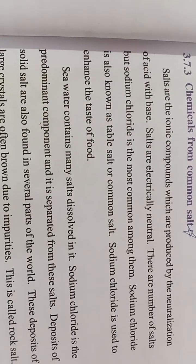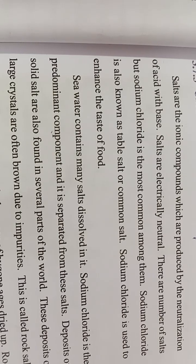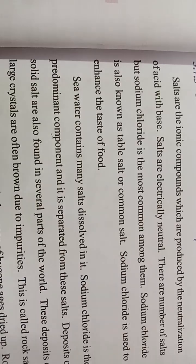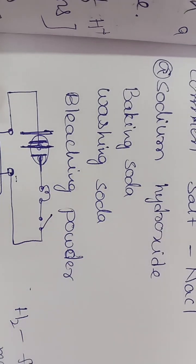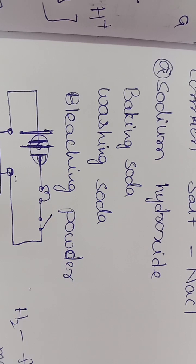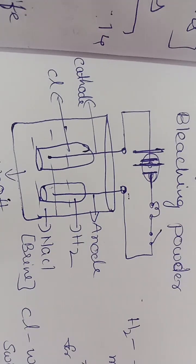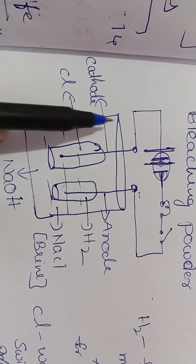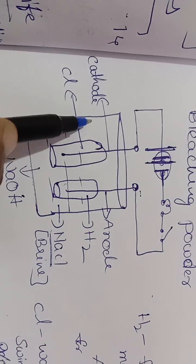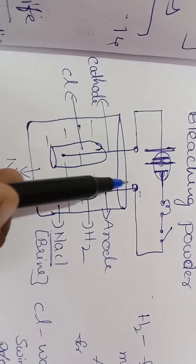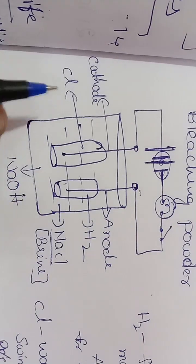Next: chemicals from common salt. Common salt is sodium chloride, which we use for taste. We get it from ocean or sea water. From common salt we get sodium hydroxide, baking soda, washing soda, and bleaching powder. To extract these, they take a beaker, add sodium chloride solution - sodium chloride dissolved in water - and connect it to a battery.